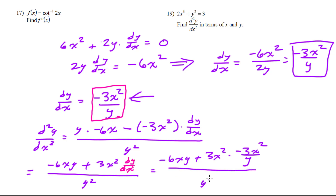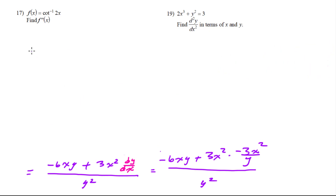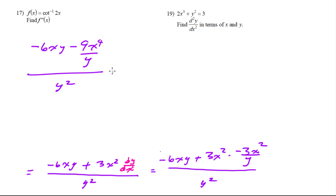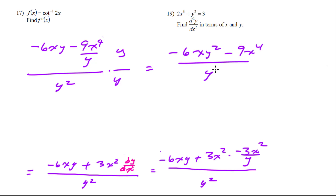Substituting in, we get negative 6xy plus 3x squared times negative 3x squared over y, all over y squared. Simplifying the complex fraction, we have negative 6xy minus 9x to the fourth over y, all over y squared. Multiplying by y over y to clear the complex fraction gives negative 6xy squared minus 9x to the fourth, all over y cubed.